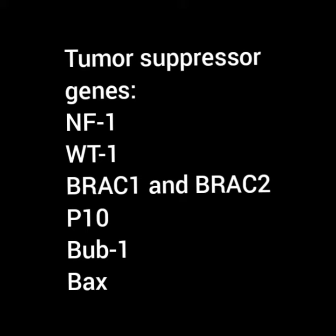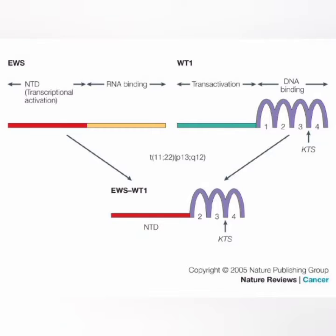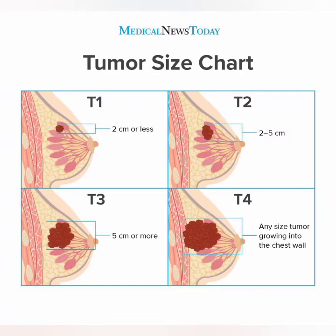Welcome back to another video. In this video we are going to discuss some of the tumor suppressor genes. Among them, the first one includes Wilms tumor 1, that is the WT1 gene. These genes code for proteins that are responsible for the production of kidney and gonads.